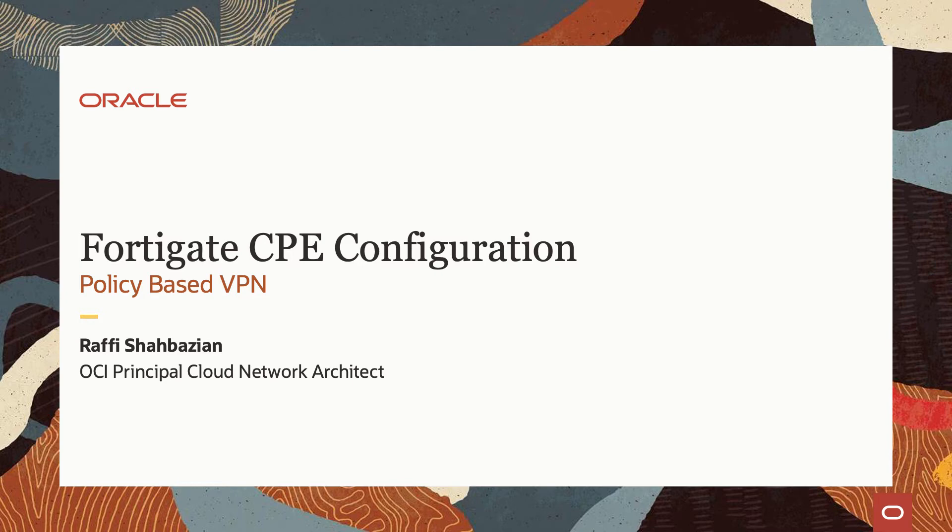Hi everyone, my name is Rafi Shabazian and I'm a Principal Cloud Network Architect for Oracle Cloud Infrastructure. In today's demo, we're going to go over how to configure an on-premise FortiGate firewall to connect to OCI's VPN Connect using policy-based VPN to support multi-encryption domains.